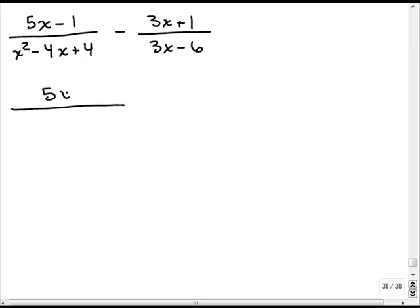we have 5x minus 1 in the numerator. I'm going to put a parenthesis around that and in the denominator we have x squared minus 4x plus 4. That's a perfect square. You could either write it as x minus 2 squared or x minus 2 times x minus 2.